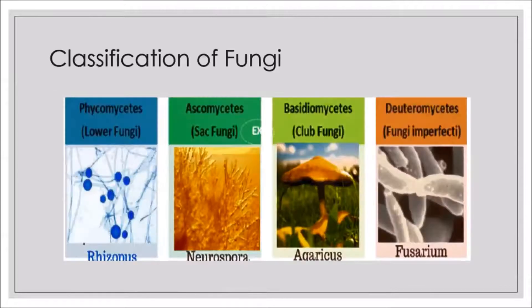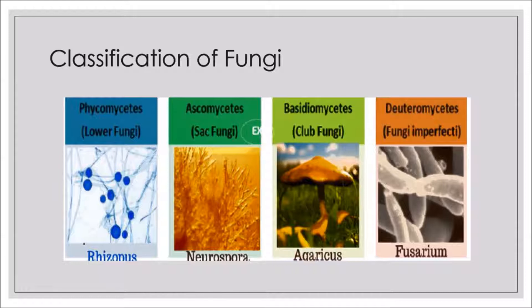The classification of fungi includes four groups: Phycomycetes, also called lower fungi, with example Rhizopus; Ascomycetes, also known as sac fungi, example Neurospora; Basidiomycetes, also known as club fungi, example Agaricus; and Deuteromycetes, also known as fungi imperfecti, example Fusarium.